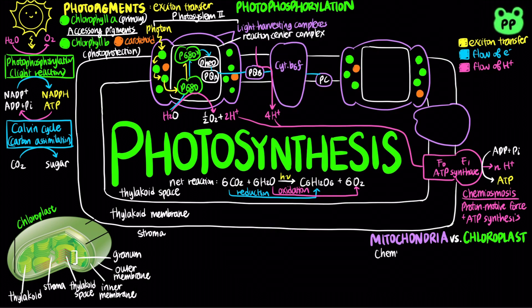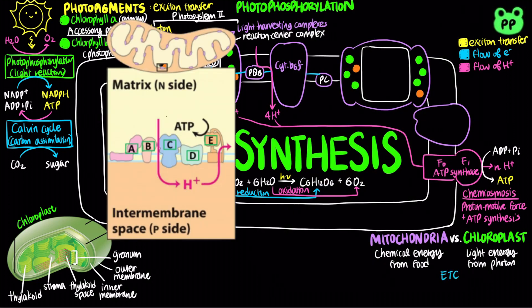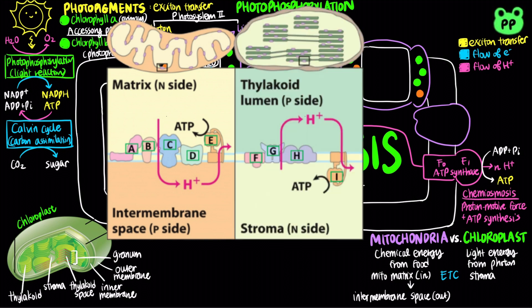Mitochondria transfer chemical energy from food to ATP, whereas chloroplasts transform light energy from photons to ATP. In mitochondria, the electron transport chain pumps protons out of the mitochondrial matrix into the intermembrane space, whereas in chloroplasts, the electron transport chain pumps protons from the stroma into the thylakoid space. As a result, the intermembrane space has lower pH in mitochondria, and the thylakoid space has lower pH in chloroplasts.